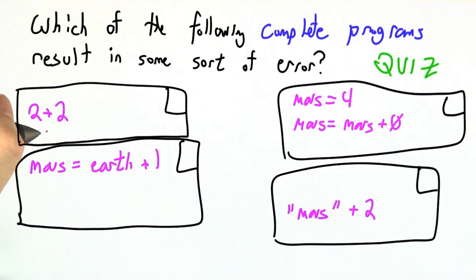2 plus 2, we're actually pretty sure this works out. There's no error for this one, it's going to evaluate to 4.